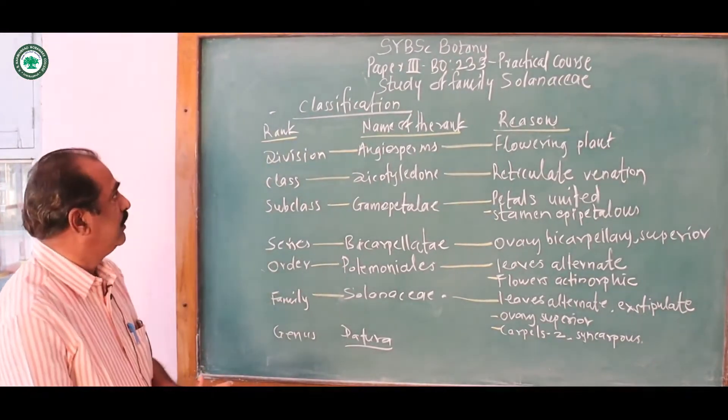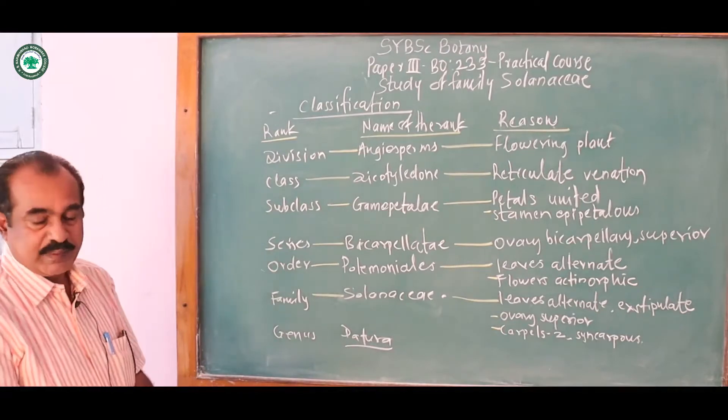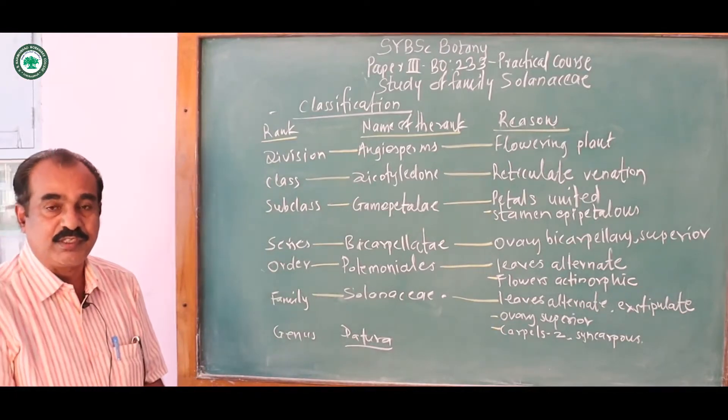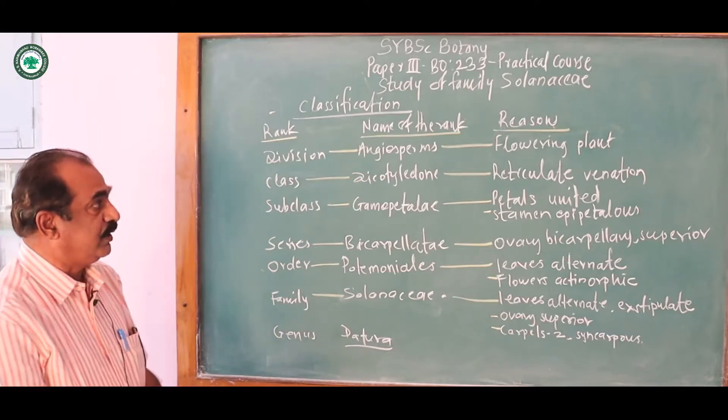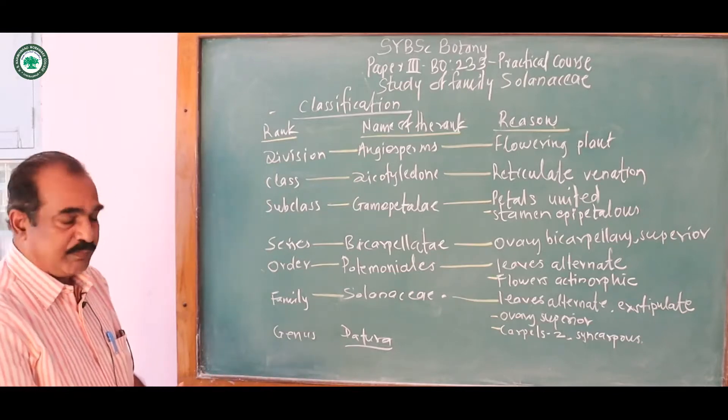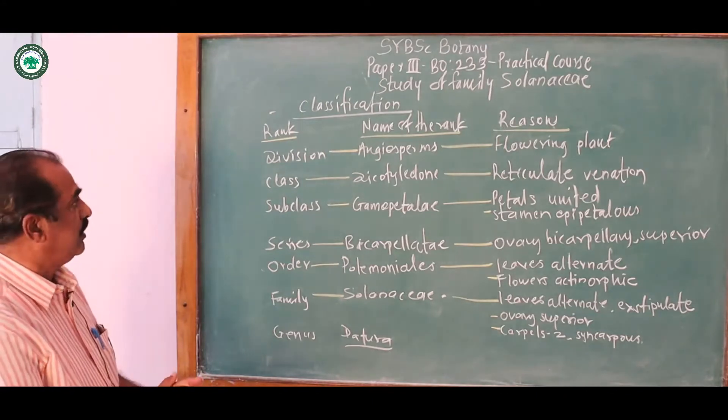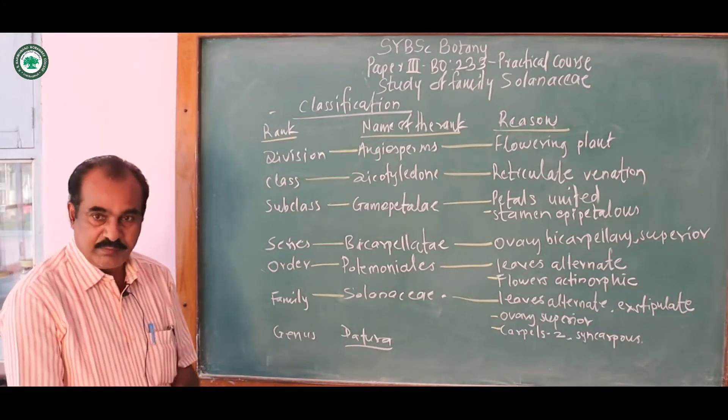Now first the classification. Division angiosperms and the reason is this is the flowering plant. Class dicotyledon, before this there is the division, division angiosperms, it is the flowering plant.